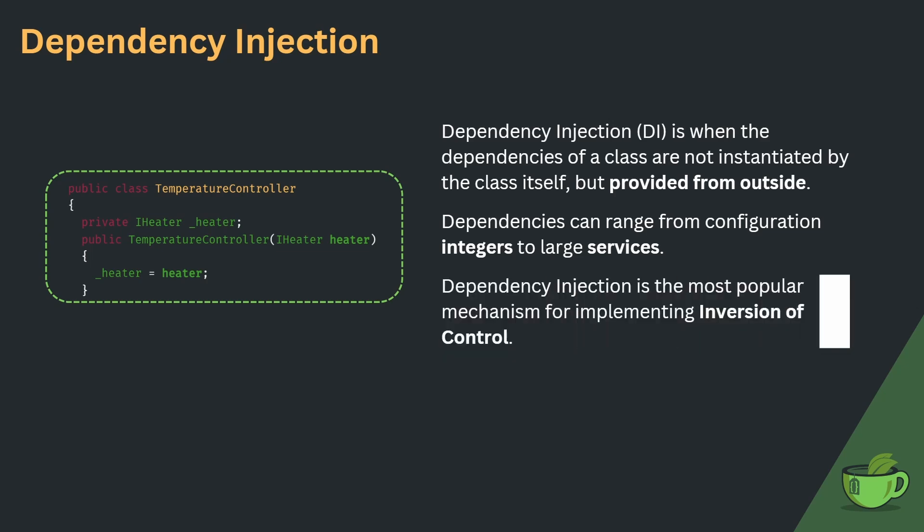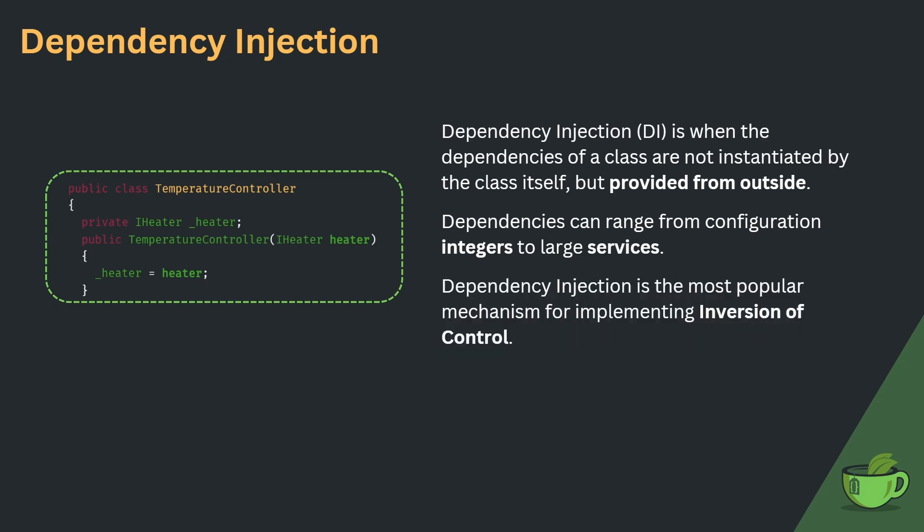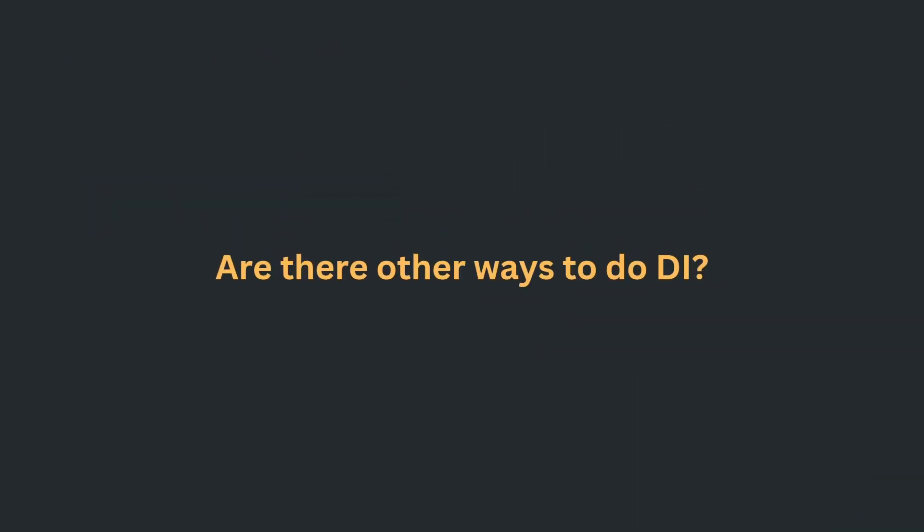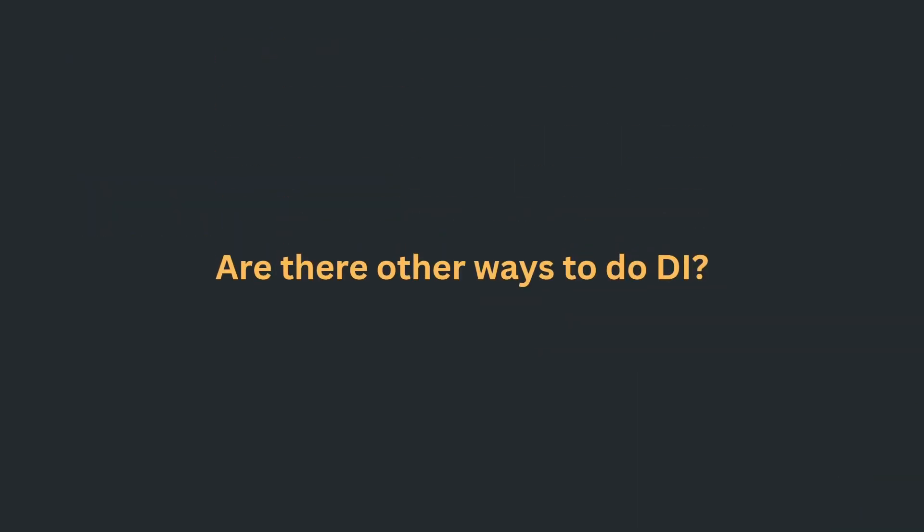Dependency injection is one mechanism for implementing inversion of control. It is the most popular by far, but there are others, like using a service locator. Dependency injection is quite trivial but so powerful.